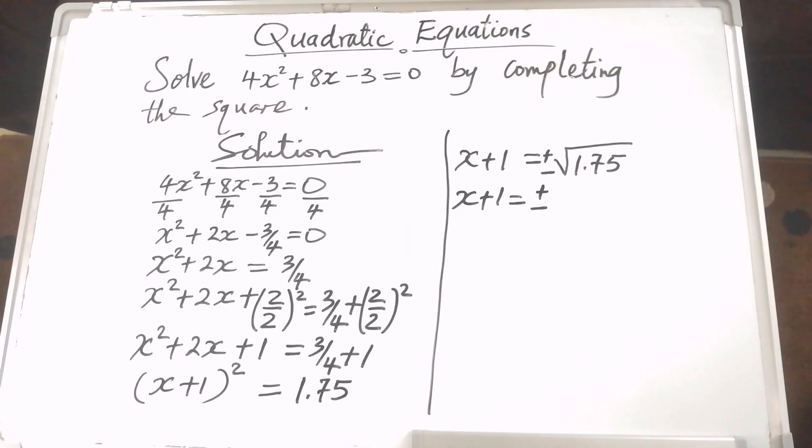You may use your calculator to make it easier, and the square root of 1.75 gives you 1.323. Therefore, that is the square root of 1.75.